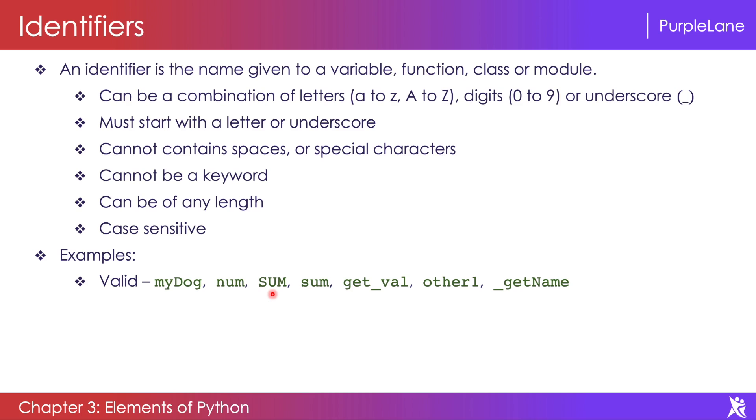Now let's look at some invalid identifiers. Here, 2plus is starting with a digit, so this is not valid. My home is having a space in it, so this is not a valid identifier. And my@salary is not valid because it has the @ symbol, which is a special character in this identifier, so this is not valid.